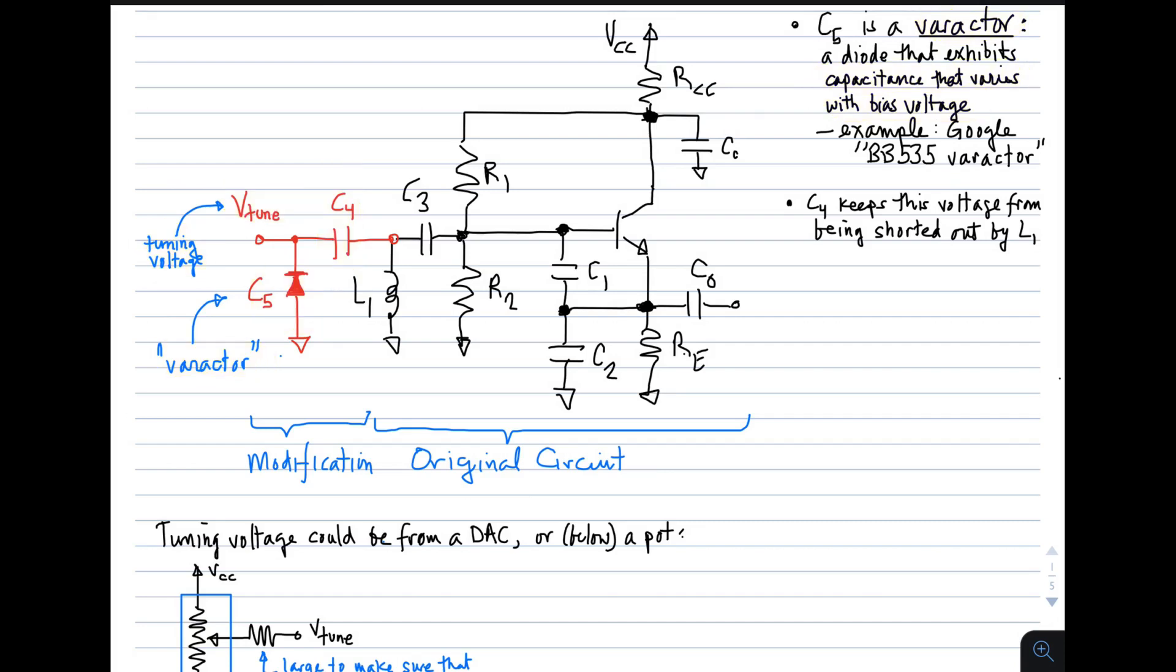If you'd like to see a particular example of a varactor, my suggestion would be to look at the BB535. If you just Google that term, you'll probably be able to pull up a data sheet. The purpose of C4 is to keep the tuning voltage from being shorted out by the inductor here, L1. If we don't have C4 and we apply this tuning voltage, it will simply be shorted to ground. So C4 is required to block the diode bias from ground and keep it from being shorted out.